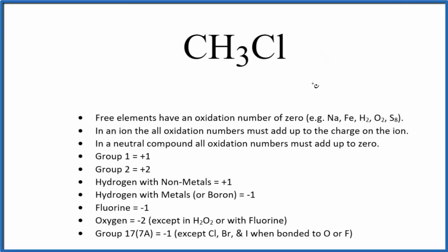Let's find the oxidation numbers for each element in CH3Cl. This is chloromethane. When we look at chloromethane, we don't have a negative or positive sign after it because it's a neutral compound. In a neutral compound, all the oxidation numbers are going to add up to zero. So that's important.